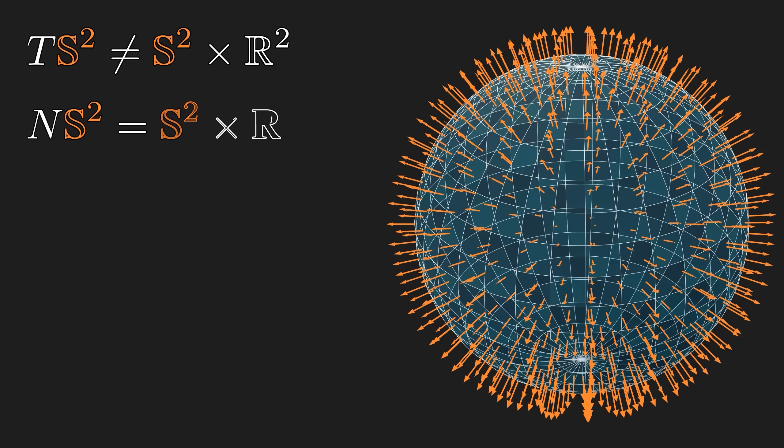Now, the normal bundle is trivial since there is an outward normal field that is nowhere vanishing. Using the same logic, the normal bundle is a one-dimensional bundle. Since we can find the one linearly independent, non-vanishing field, we know its twist is at degree zero, meaning there is no twist at all.